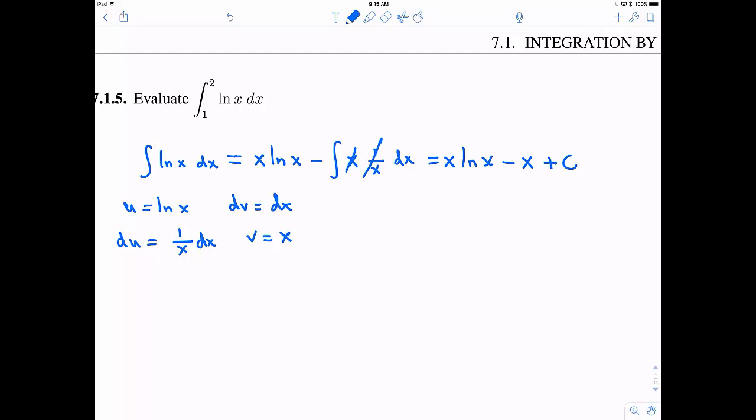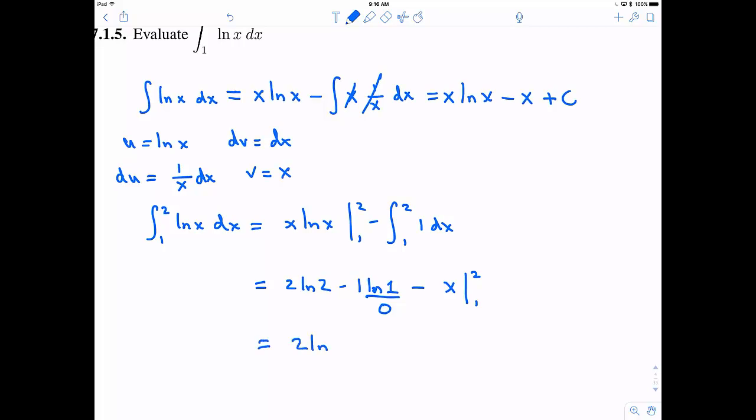Okay this was all for indefinite integrals and the claim is we can do this for a definite integral. So when I do this for a definite integral remember I have to evaluate from 1 to 2. So evaluate this from 1 to 2 minus the integral from 1 to 2 of 1 dx. And let's see so when I evaluate x natural log of x at 2 I get 2 natural log of 2 minus 1 natural log 1 but natural log of 1 is 0.